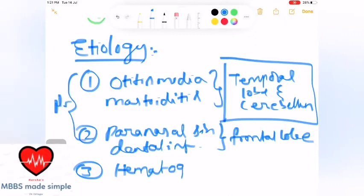The third one is hematogenous spread. The hematogenous spread affects the parietal lobe.